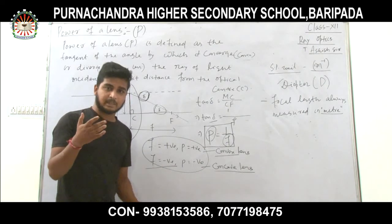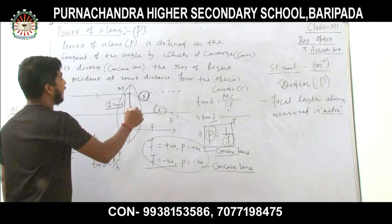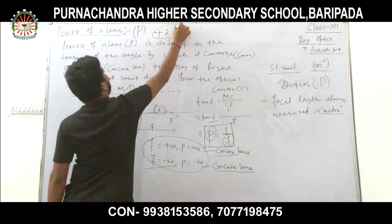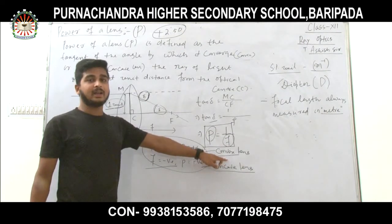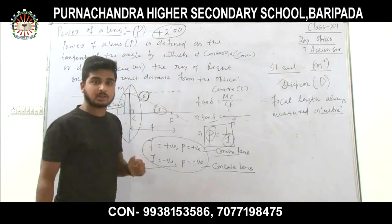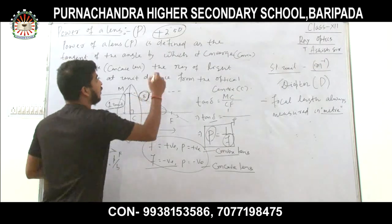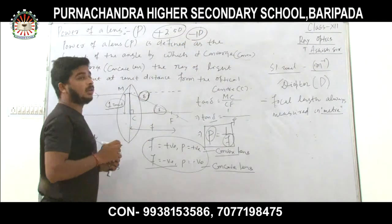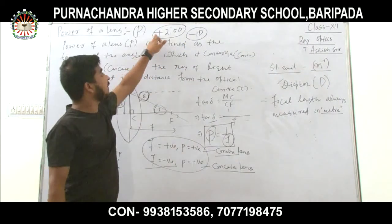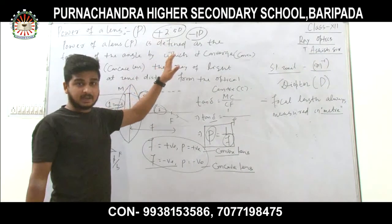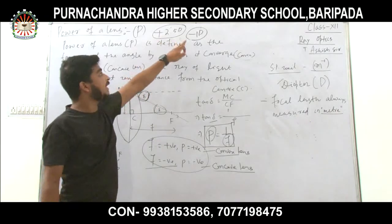As a practical example: if an optician prescribes plus 2.5 diopter spectacles, the plus sign indicates you need a convex lens. If another patient is prescribed minus 1 diopter, that means a concave lens of power 1 diopter is needed. The positive or negative sign indicates the type of lens, and the magnitude indicates the power of the lens.